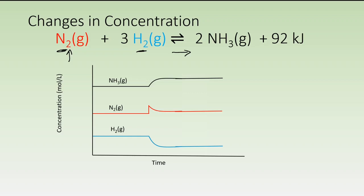How do we know that that has actually taken place? If you have a look at the shapes of the red and the blue curves immediately after the stress on the graph, you'll notice that their concentrations are decreasing after the stress because both of those curves trend downward. And while we use up some of the nitrogen and hydrogen, ammonia is being produced, as we can see by the ammonia curve going upward.